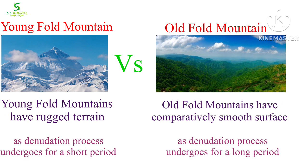Young fold mountains have very steep slope and deep valley — means rugged relief — as the denudation process undergoes for a short period. But old fold mountains have comparatively gentle slope and shallow valleys, which means comparatively smooth relief, as the denudation process undergoes for a long period.